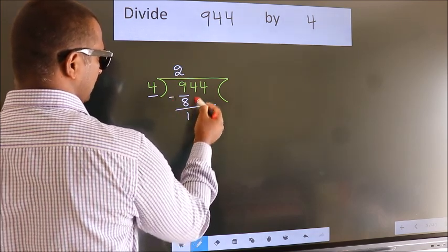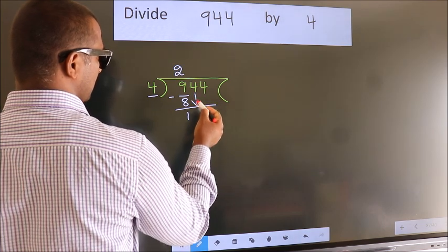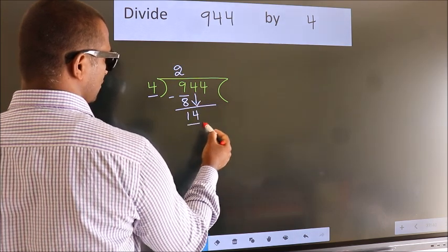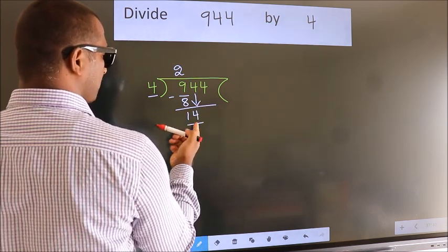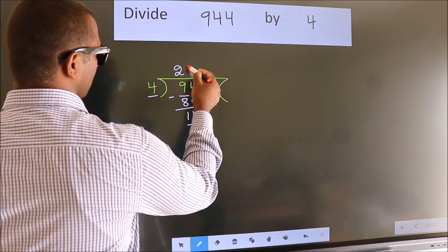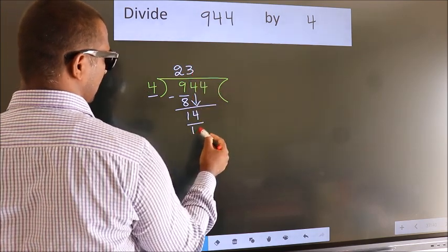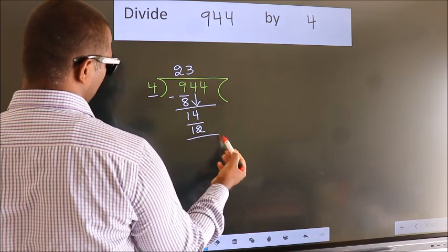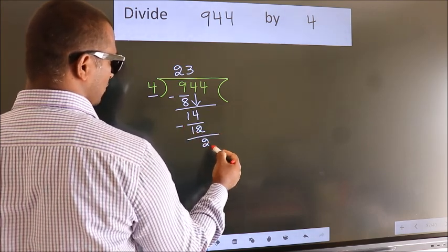After this, bring down the beside number. So, 4 down. So, 14. A number close to 14 in the 4 table is 4 threes, 12. Now we subtract. We get 2.